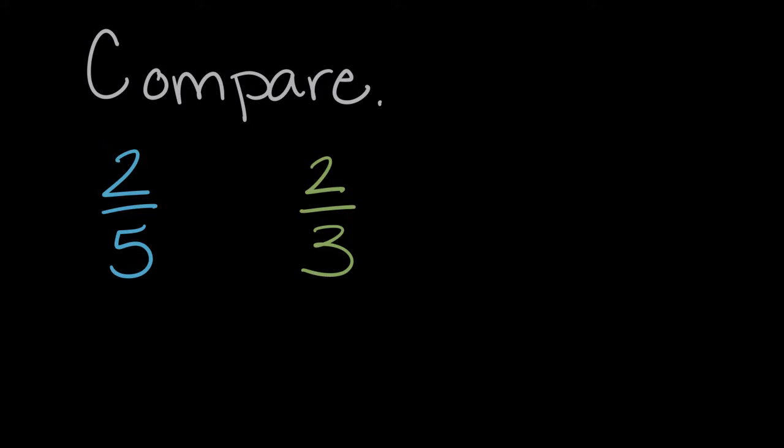Well, which two pieces are larger? The two thirds are larger, because if we only have to split our pieces three ways, we can have larger pieces. So the two fifths are smaller. These two smaller pieces are less than the two larger pieces. And again, the open end of our symbol should be facing the larger number. So two fifths is less than two thirds.